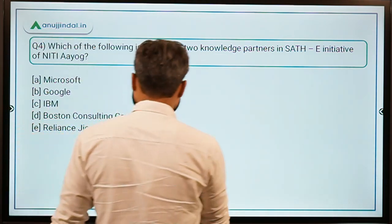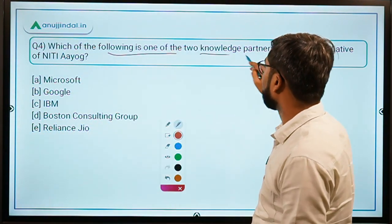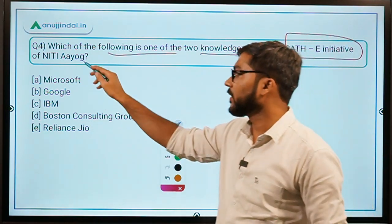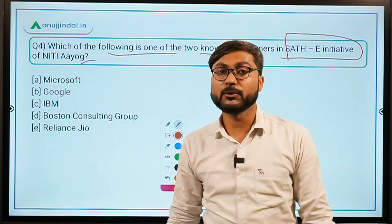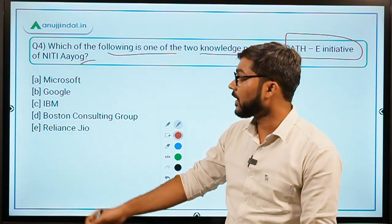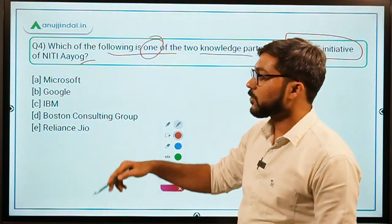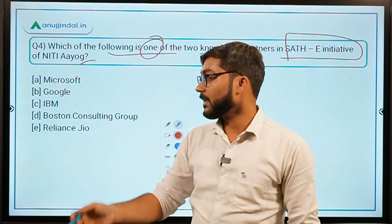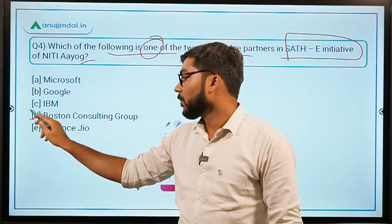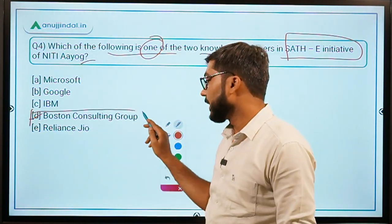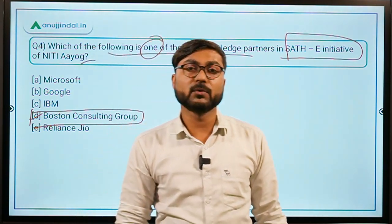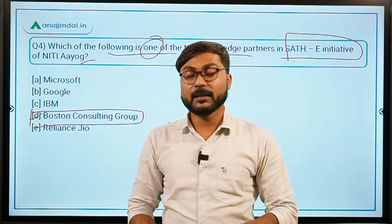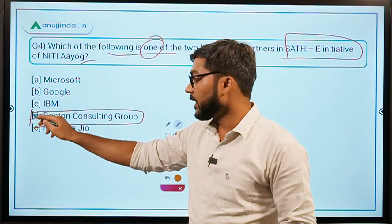Question four: Which of the following is one of the two knowledge partners in the SAATHI initiative of NITI Aayog? The two knowledge partners are the Boston Consulting Group and Piramal Foundation for Educational Leadership, so one of those would be the correct answer.